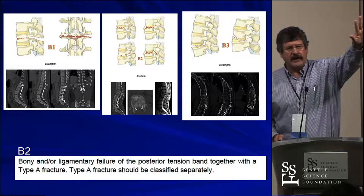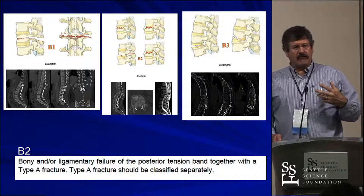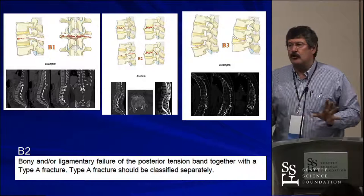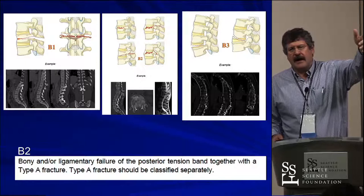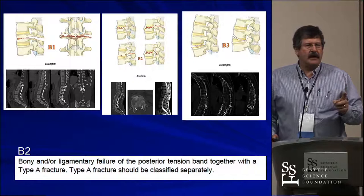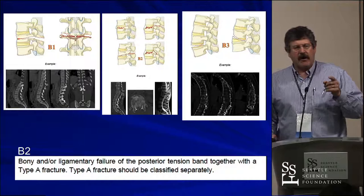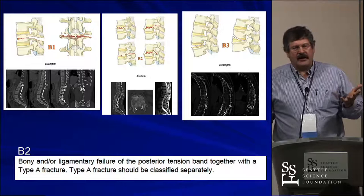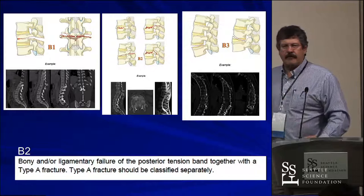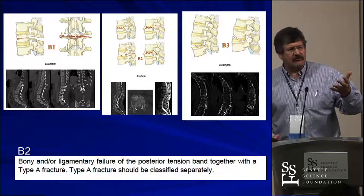B3 injuries are extension injuries — not posterior ligamentous, but extension injuries where there's no disruption posteriorly and no translation. This is actually a pretty uncommon injury and you see it in ankylosed spines, either DISH spines or ankylosing spondylitis. If you have a B injury and there's an A component, you also classify the A component — you go by the worst. So you might say 'I've got a B2 injury with an A3 injury anteriorly,' because that may be different than if there's no compression. I could say 'B2, A3' and you know exactly what I mean.